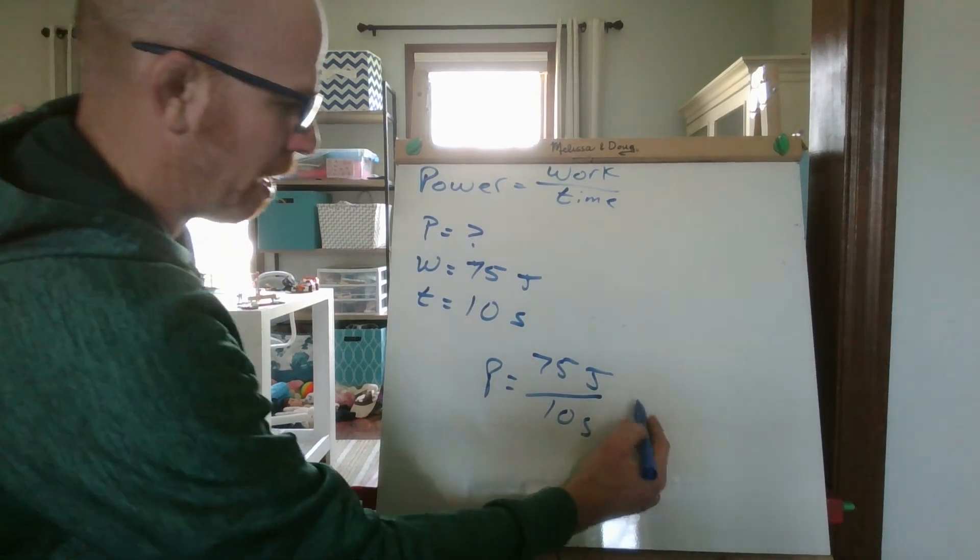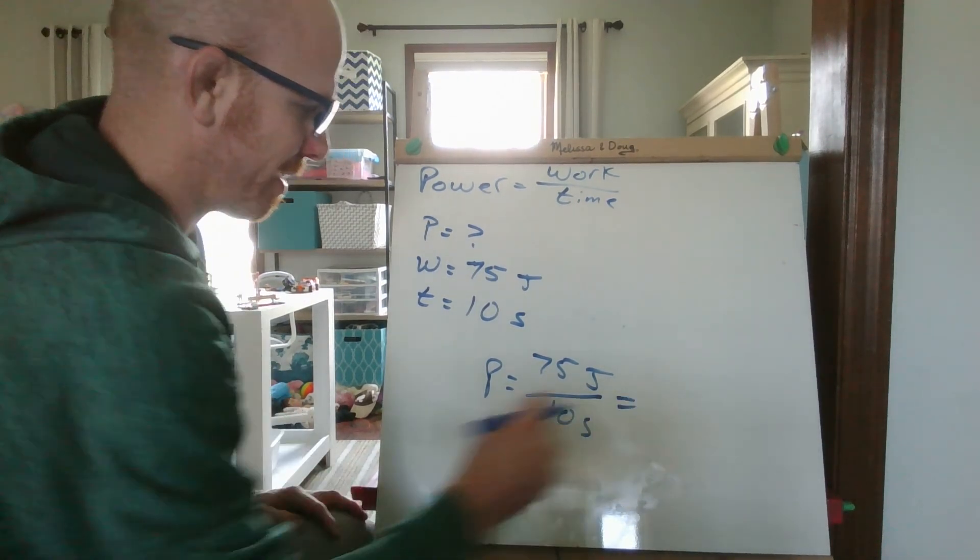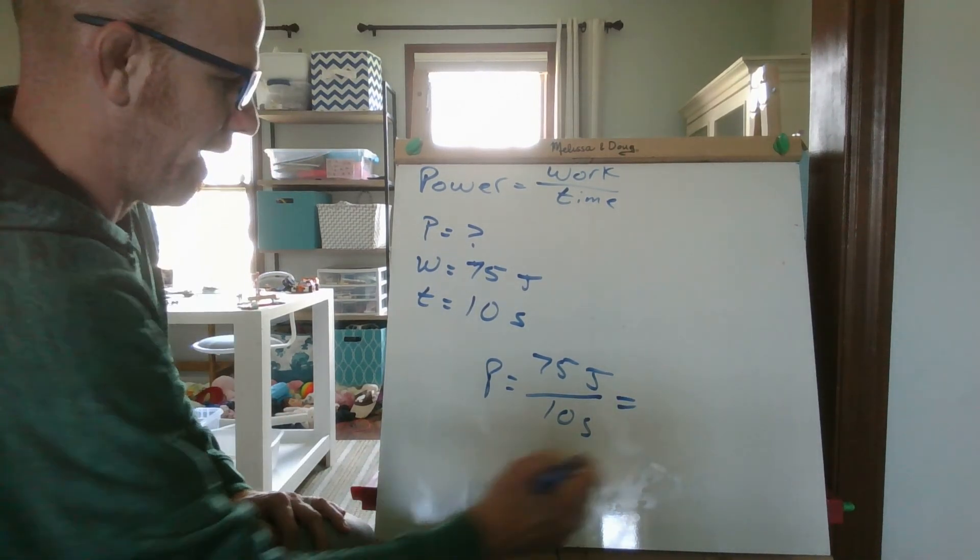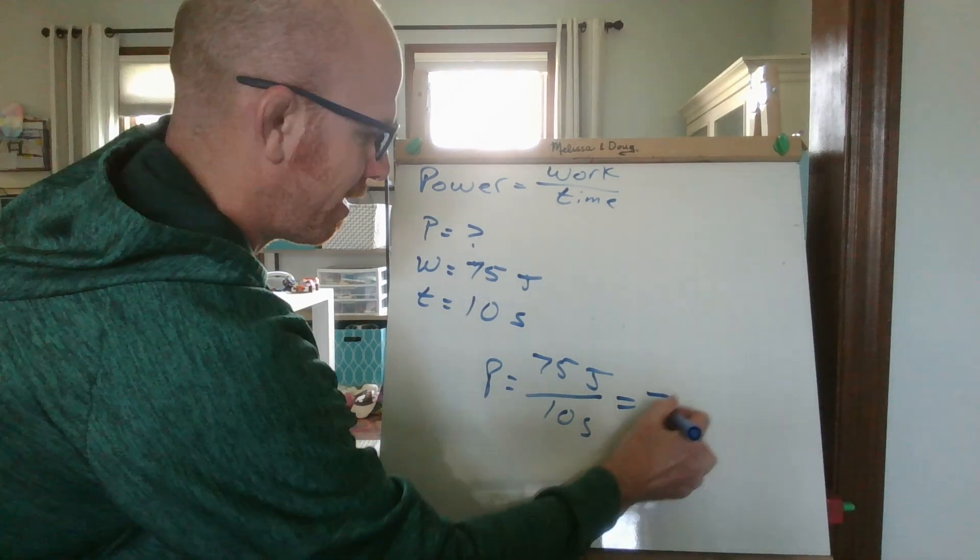So power equals 75 divided by 10 seconds. Again, pretty simple math. These are pretty easy examples right now. This is going to give me 7.5 watts.